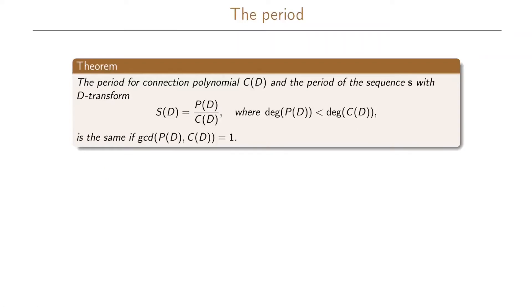We can now relate the period of the connection polynomial to the period of the sequence. The period of C(D) and the period of sequence S — where S has a D-transform of the form S(D) equals P(D) divided by C(D), with the degree of P(D) less than the degree of C(D) — are the same, provided the greatest common divisor of P(D) and C(D) is 1. So if GCD(P(D), C(D)) = 1, the period of the sequence equals the period of the connection polynomial.